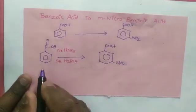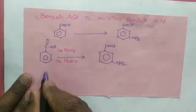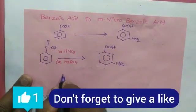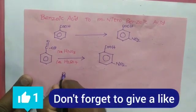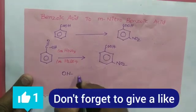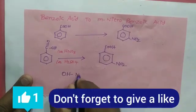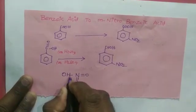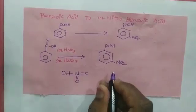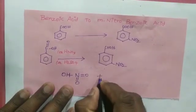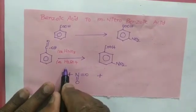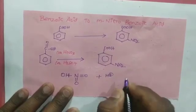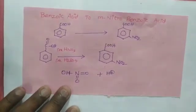Now, here is how the nitrating mixture works. I am writing HNO3 as O-H, with N double bond O, double bond O. When HNO3 reacts with H2SO4, an H+ ion is released, and I will be taking that H+.